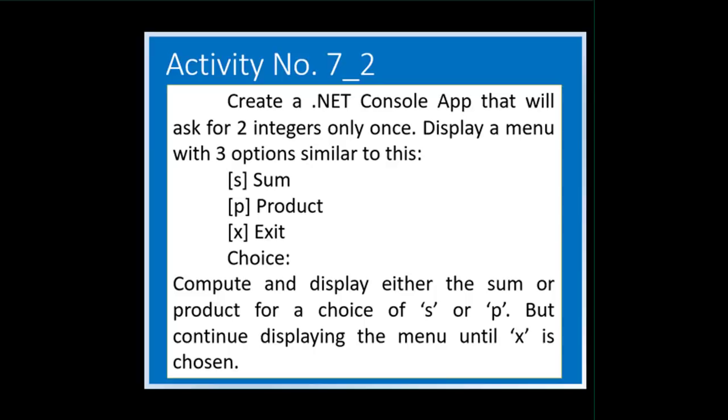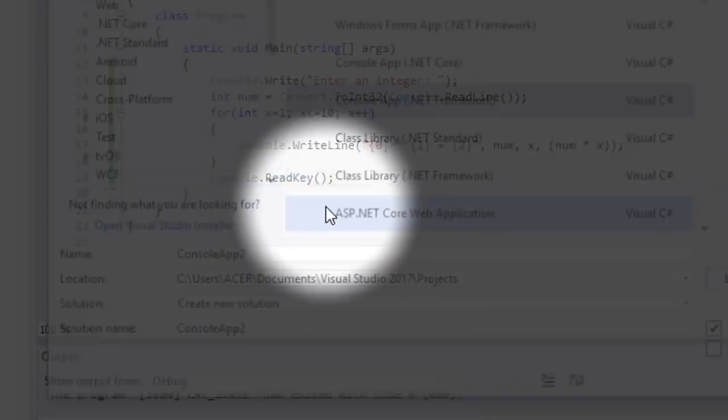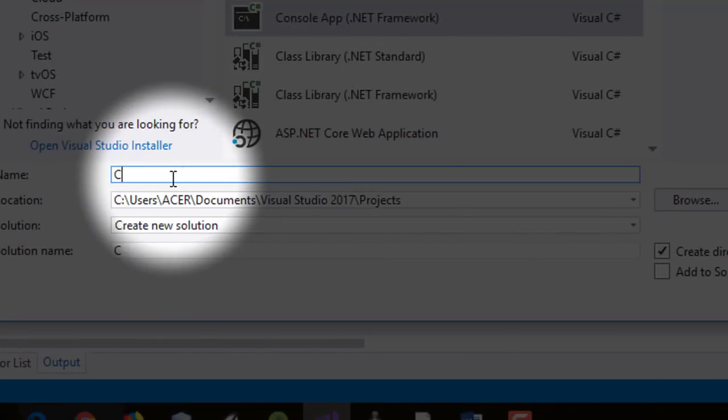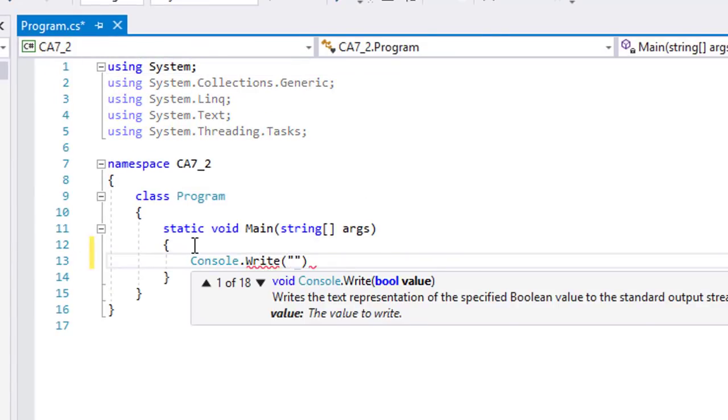If you want to do it on your own, please pause this video now. Let's create a new project and name it ca7 underscore two. We will start by asking for the two numbers.